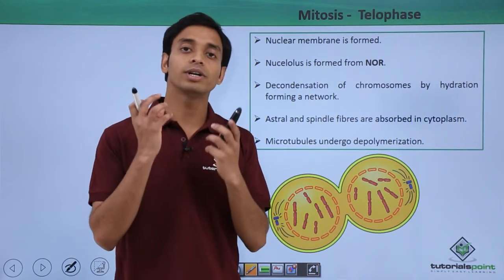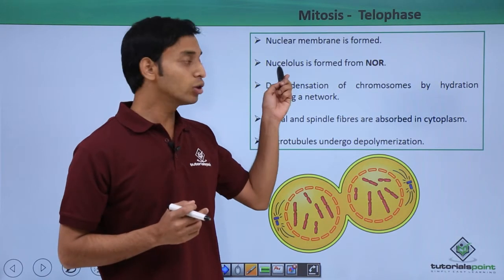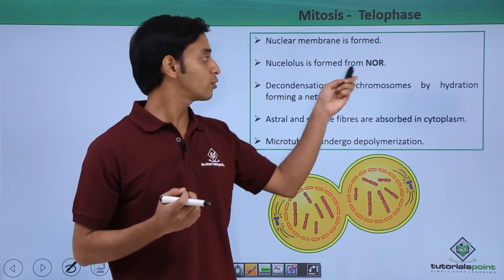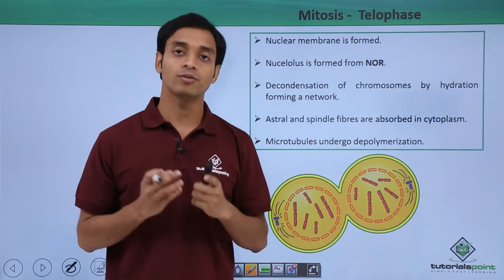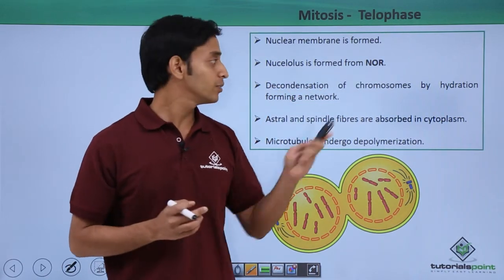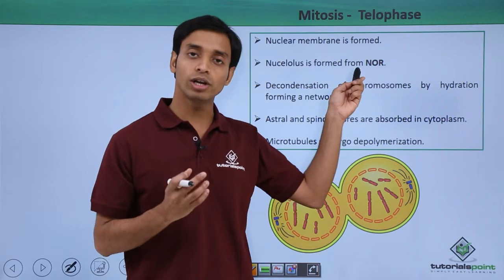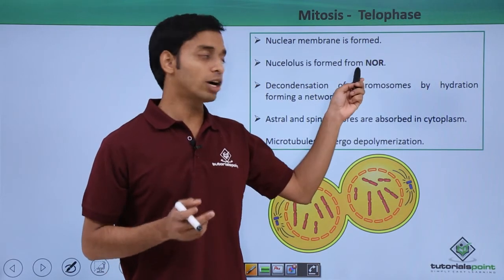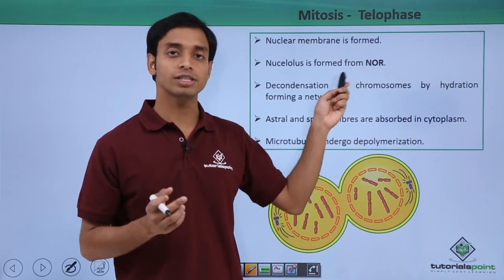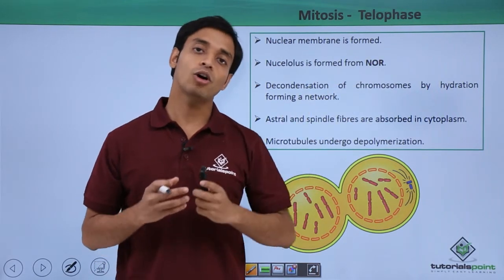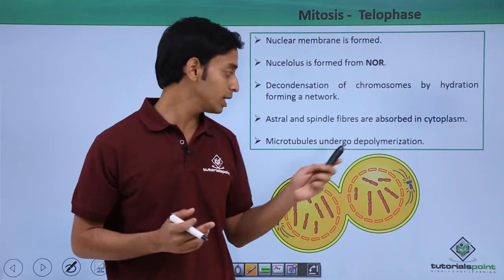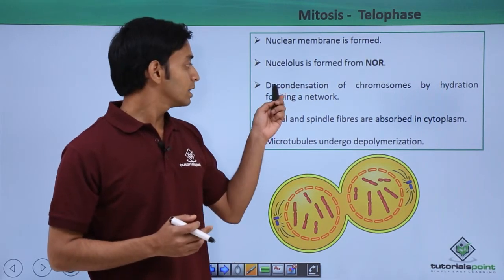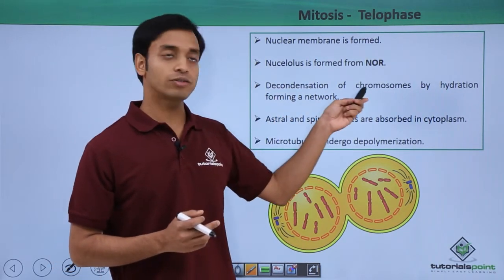The nucleolus also starts appearing from the NOR — which stands for Nuclear Organizing Regions. From these NOR regions, the nucleolus starts forming in both of these cells.